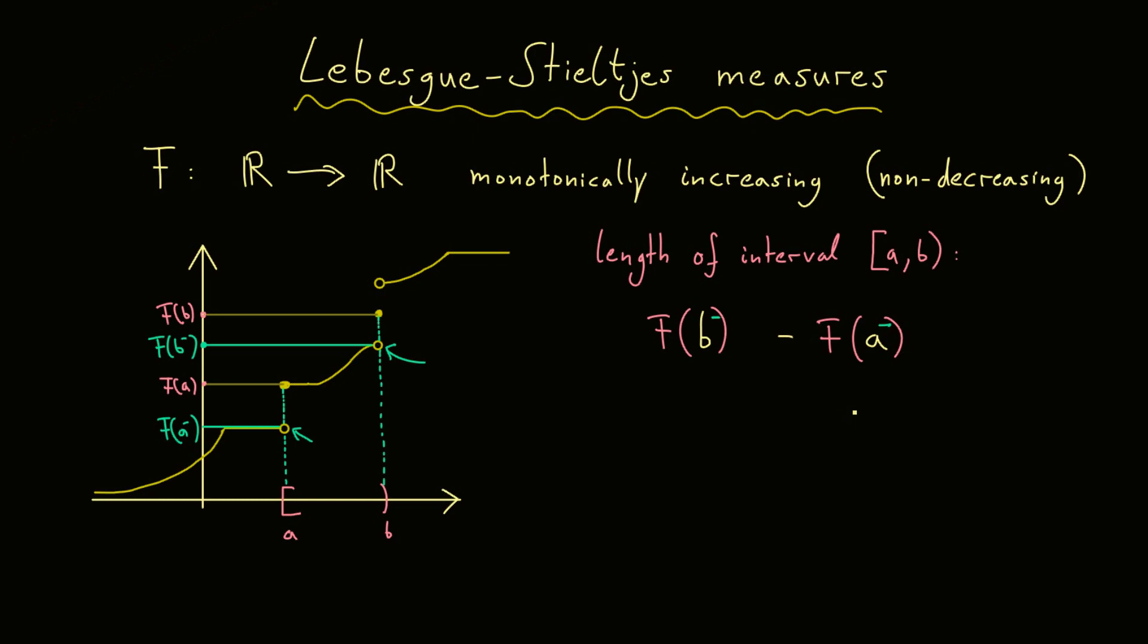Now, this thing is now our new notion of a length of an interval. And of course, I should give it a name, and we call it μF of this interval. And to be more precise, I also add the definition of our F(b-) or F(a-). As you can see, this is nothing else than a left limit.